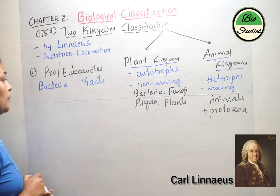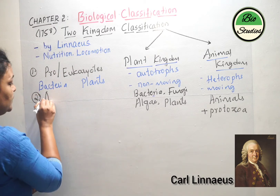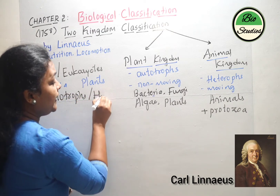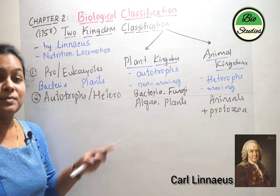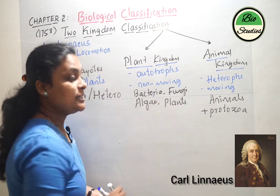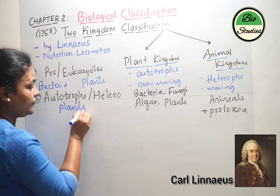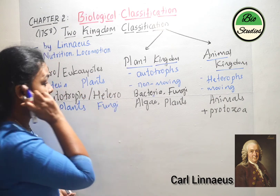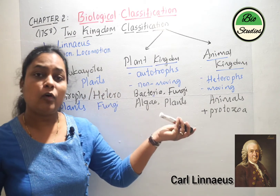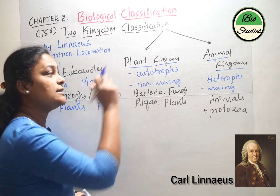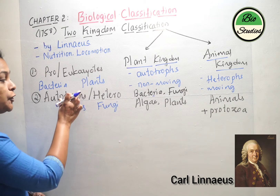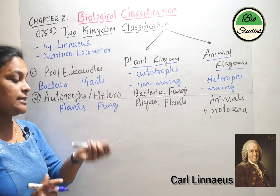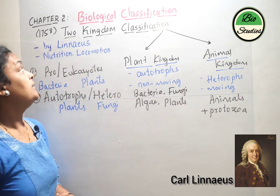The second drawback was that all autotrophs were mixed with heterotrophs. Autotrophs are organisms that prepare their own food. Which autotrophs and heterotrophs were mixed? All the plants are autotrophs, but fungi are always heterotrophs. So during two kingdom classification, different types of organisms were mixed and put under a single kingdom — plants which are autotrophs were considered together with fungi which are heterotrophs. This is the second limitation of two kingdom classification.